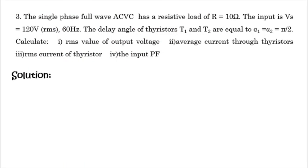Next question: a single-phase full-wave AC voltage controller has a resistive load of R equal to 10 ohms. The input is Vs equal to 120 volts RMS, 60 hertz. The delay angle of thyristors T1 and T2 are alpha 1 equal to alpha 2 equal to pi by 2. Calculate RMS value of output voltage, average current through the thyristors, RMS current of the thyristor, and the input power factor.